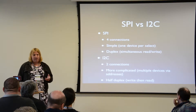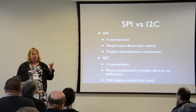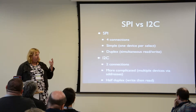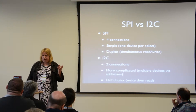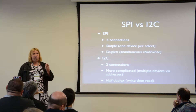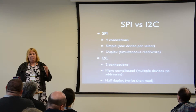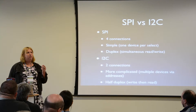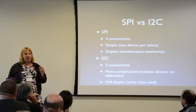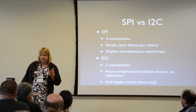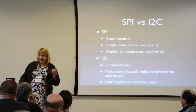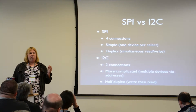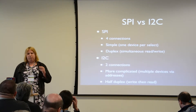SPI has four connections: read-write, chip select, and the clock. You can read and write at the same time, so it's full duplex. You need a chip select per client device. I2C has two connections — clock and a read-write line — so you tend to do things half duplex. But every device has an address, so you basically wire them all in parallel.